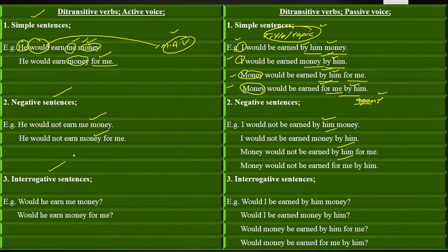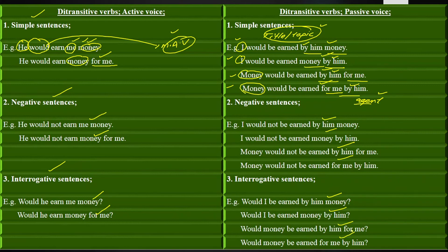Next we have interrogative sentences — those in which we ask questions or put queries. Active: 'Would he earn me money?' and 'Would he earn money for me?' Passive: 'Would I be earned by him money?' 'Would I be earned money by him?' 'Would money be earned by him for me?' 'Would money be earned for me by him?'